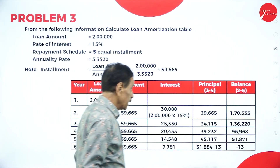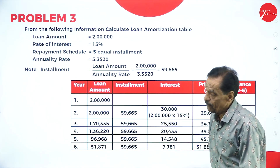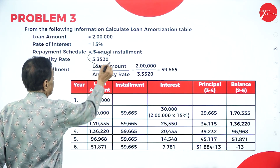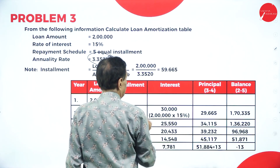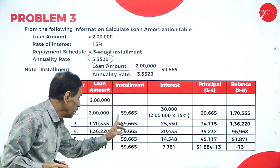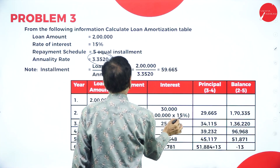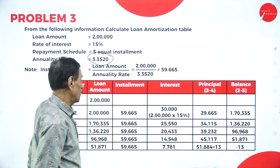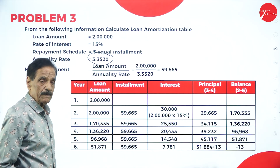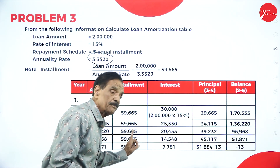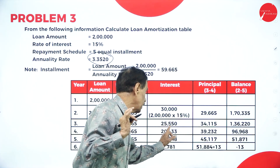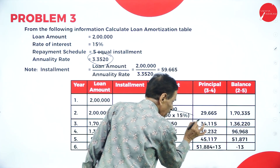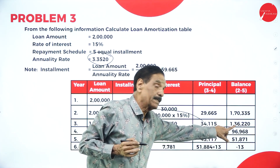Last problem: loan amount is 2 lakh, rate of interest 15%, 5 equal installments, annuity rate 3.3520. Loan amount 2 lakh divided by 3.3520; you will get 59,665 per installment. Year 1: 2 lakh to be paid; 15% of 2 lakh is 30,000 interest; balance principal payment 29,665; balance amount to be paid is 1 lakh 70,335. Year 2: loan balance 1 lakh 70,335; installment 59,665; interest is 25,550; principal payment 34,115; balance 1 lakh 36,220.